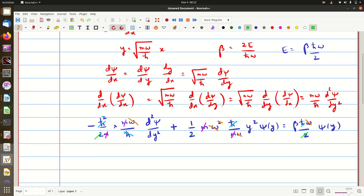Let us see the equation: minus d square psi of y by dy square plus y square psi of y equal to beta times psi of y.